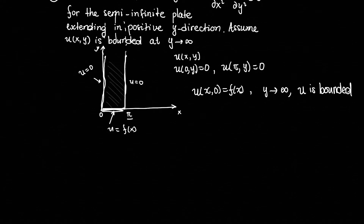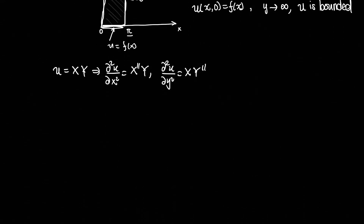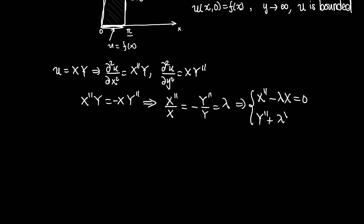I'm going to go pretty fast through the separation since we did this previously. We assume u = X(x)·Y(y), substitute into the PDE, and separate to get X''/X = -Y''/Y = λ. This gives us two ODEs: X'' - λX = 0, and Y'' + λY = 0.